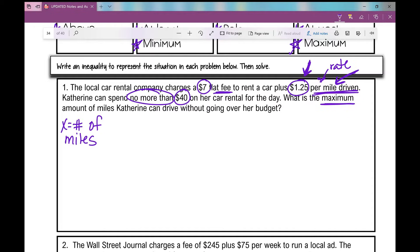First, what does the car rental company charge? They're going to charge a $7 flat fee plus $1.25 per mile. That's your rate. That's the number that goes in front of the X. The X would represent the number of miles. And what amount does Catherine have? She can't spend any more than $40. So I'm going to put that over here.